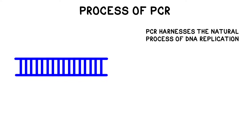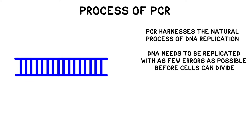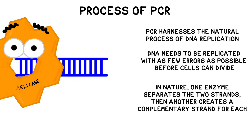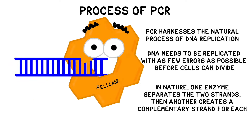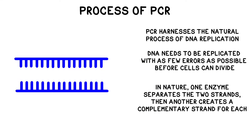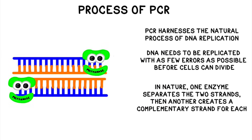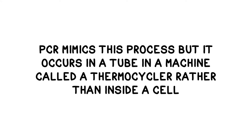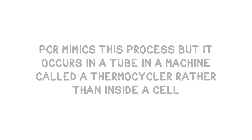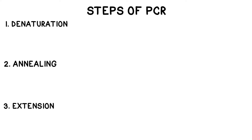PCR mimics many aspects of the natural process of DNA replication. DNA is a double-stranded molecule and it needs to be replicated faithfully before cells can divide. In nature, one enzyme separates the two strands, and then another creates a complement to each strand, resulting in two identical copies. PCR does a very similar process, but using a machine called a thermocycler rather than a cell. The steps of PCR are denaturation, annealing, and extension, and the machine uses heat to control the reaction.